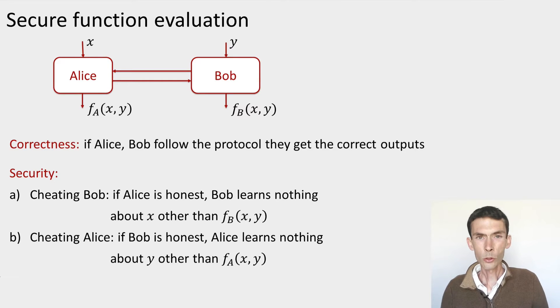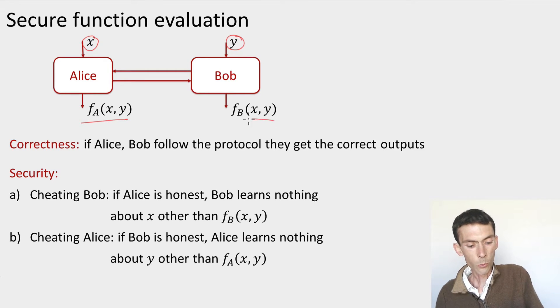In multiparty computation, also sometimes called secure function evaluation, there's a number of parties. For simplicity, we're going to focus on two parties, the usual suspects, Alice and Bob. And each of these parties has an input. Alice receives an X, Bob receives a Y, taken from some input set. You can think of them as just being bit strings. And their goal is for Alice to output a function FA, Bob to output a function FB of their inputs X and Y by communicating.